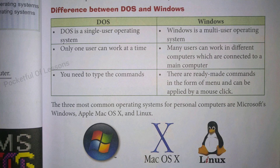Windows can work on other computers as well. If it is installed on one computer, by connecting to it we can use other computers too. Now the third point: in DOS you need to type commands. When DOS was used, lengthy commands were written, and only when the command was written would the computer work.